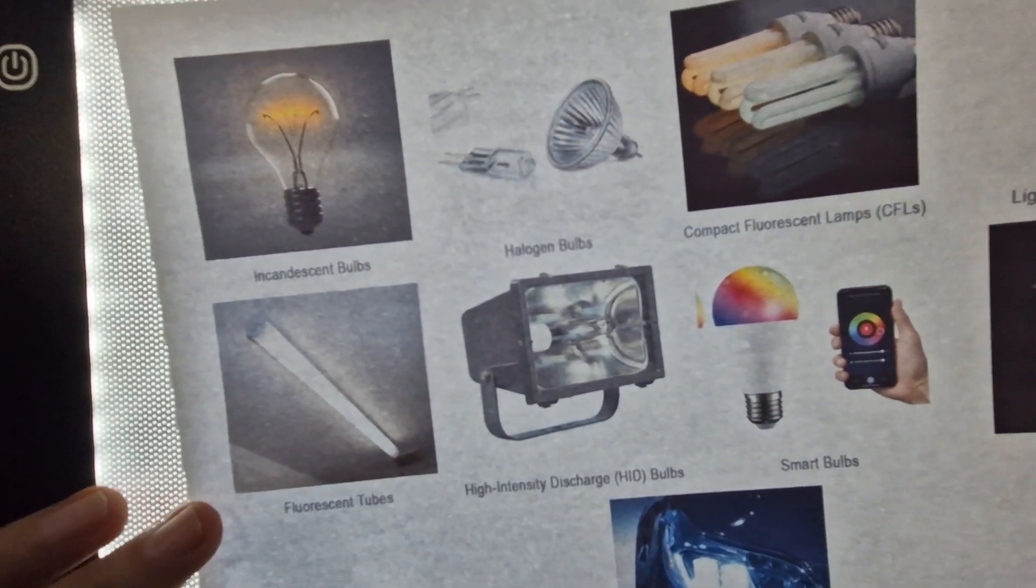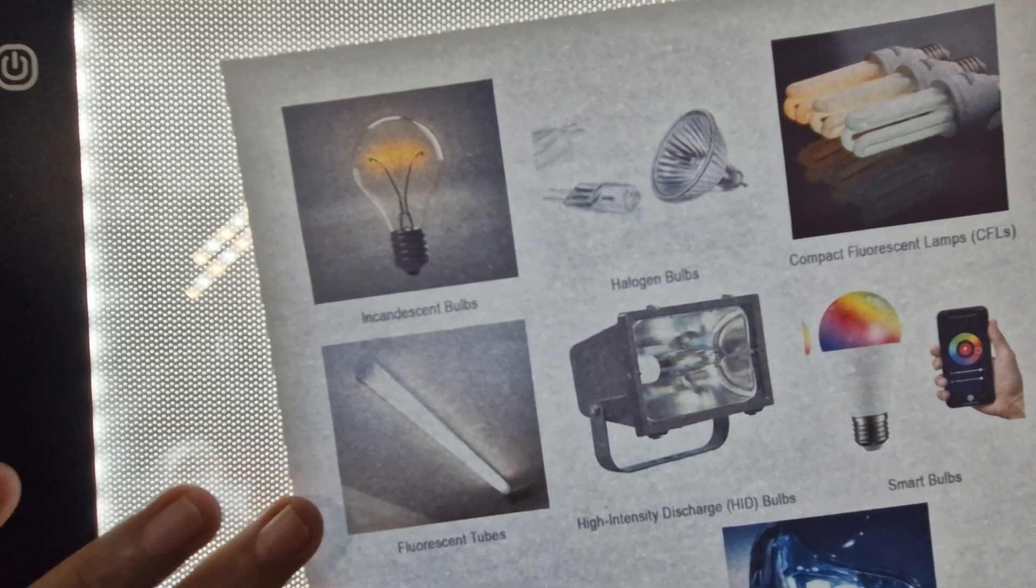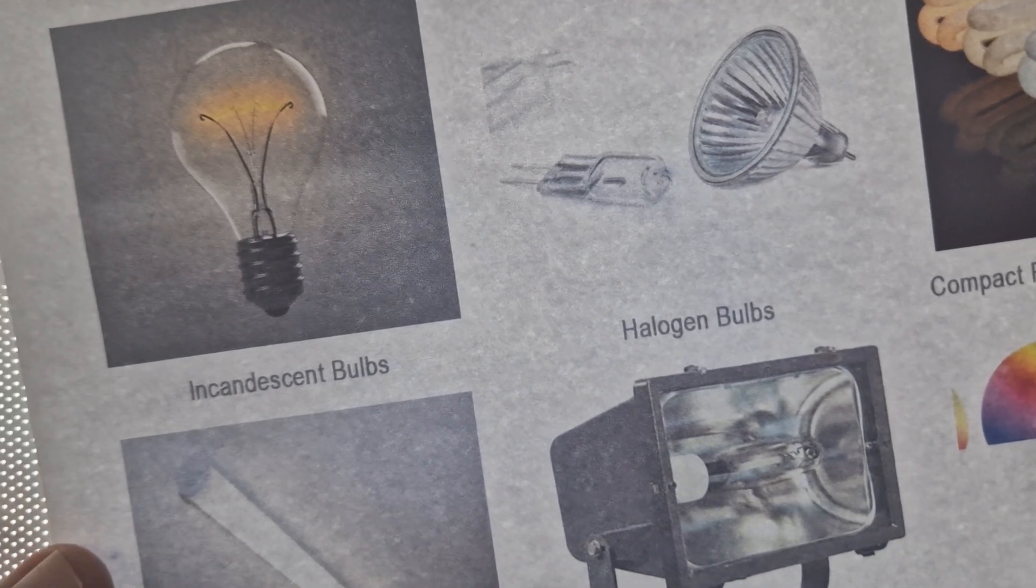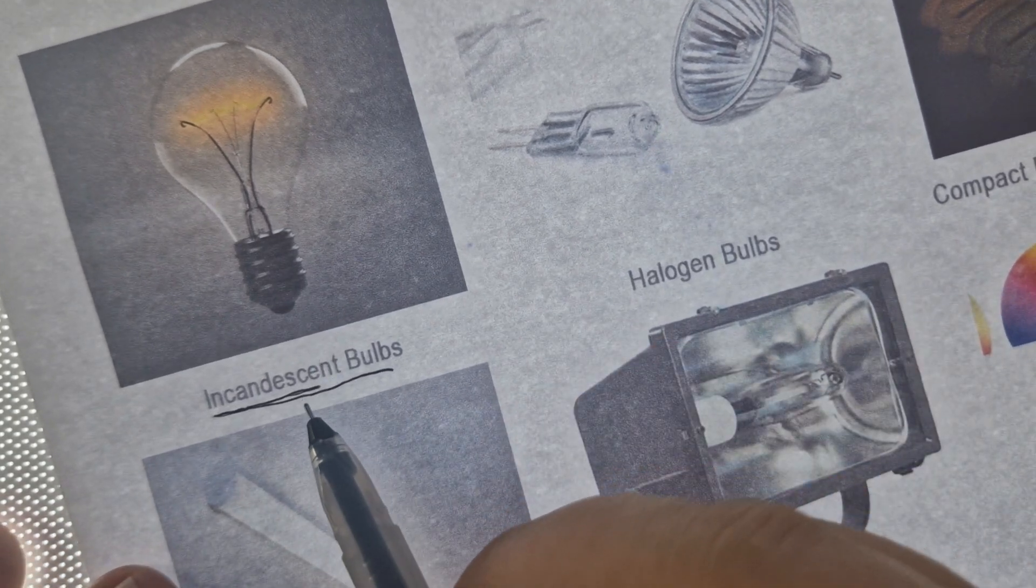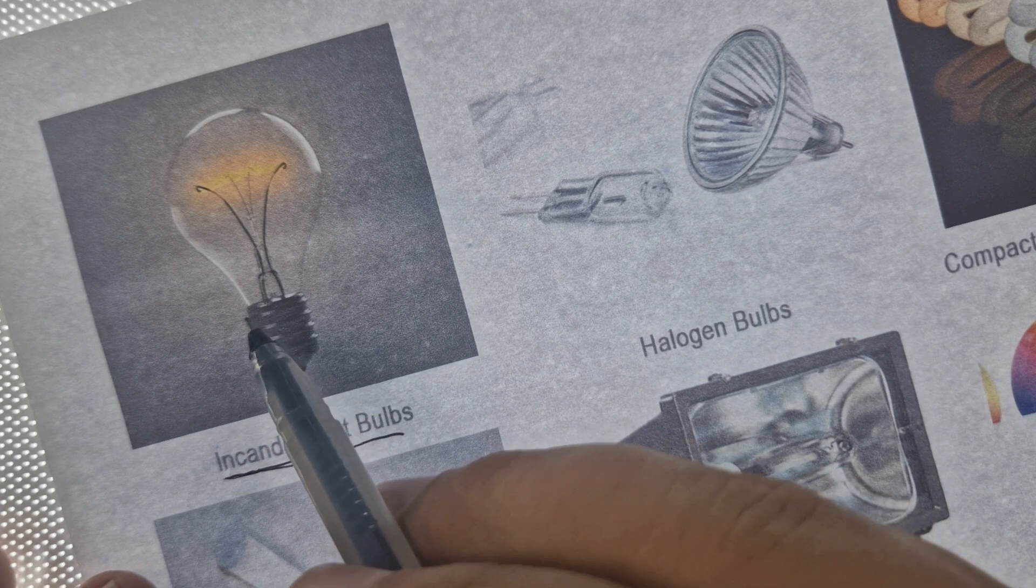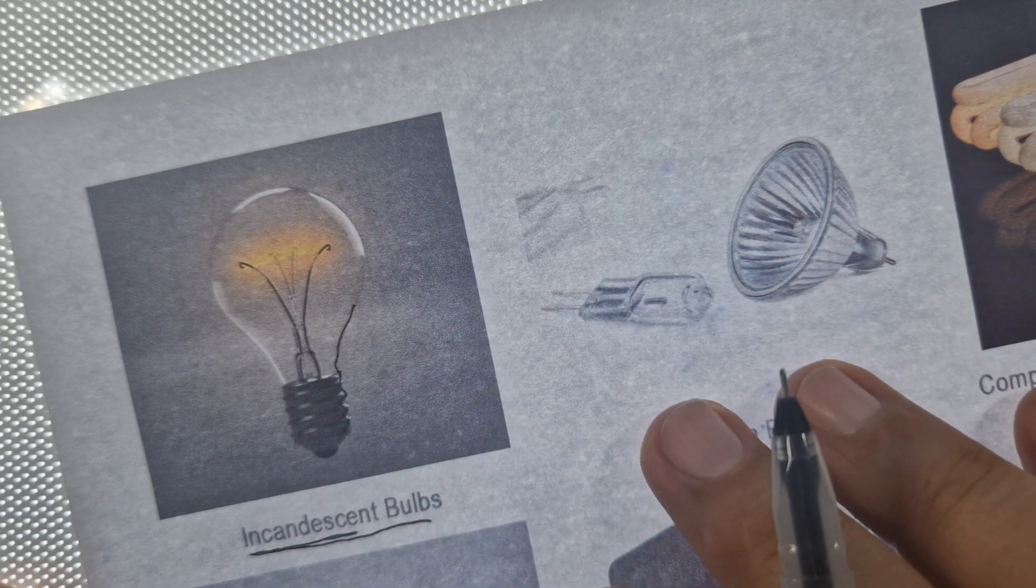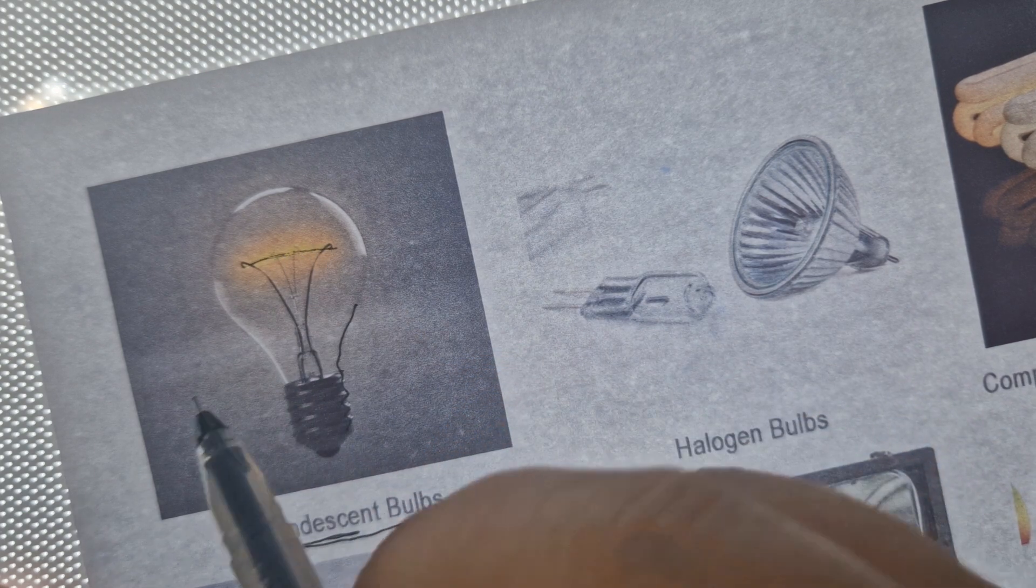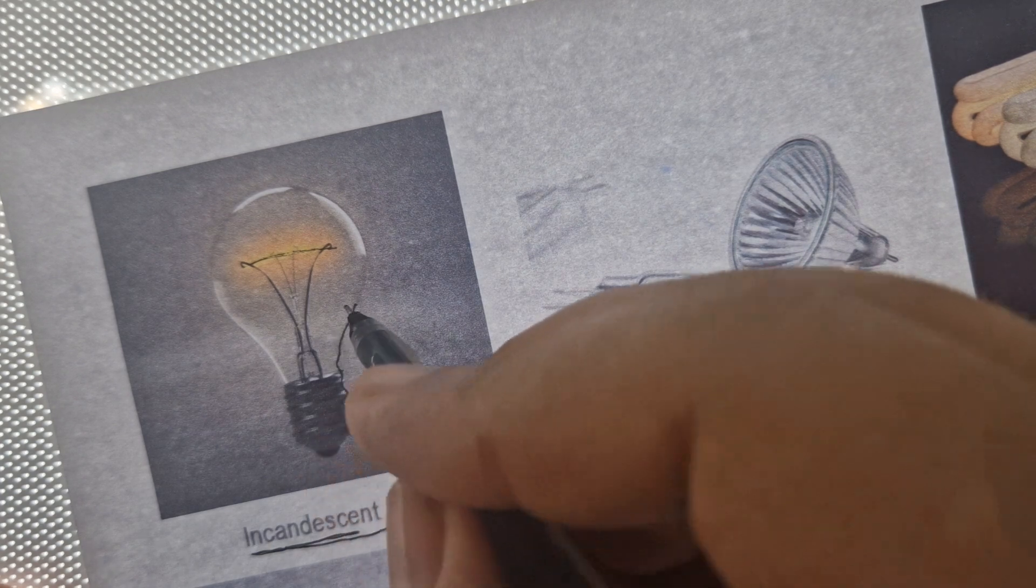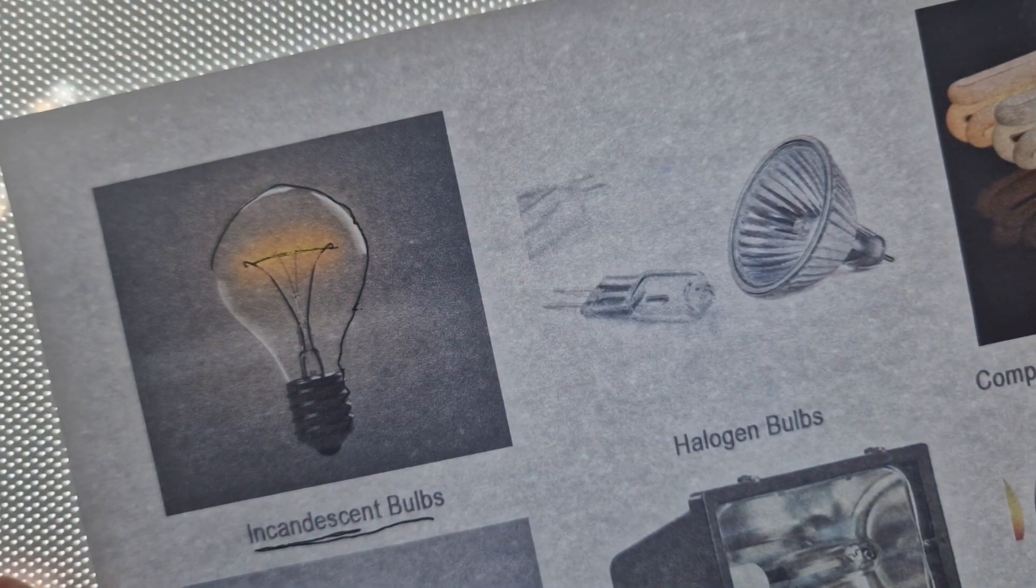Let's start and discover how they work. First, we're going to start with the classic one, the incandescent light bulb. As we all know, this is the classic one. But how does it work? It produces light by heating the filament. The filament is heated until it glows. This occurs instantly in a matter of milliseconds.